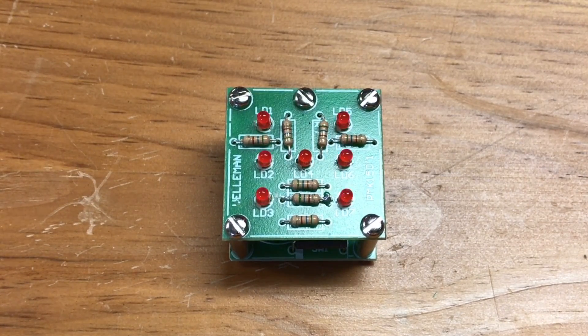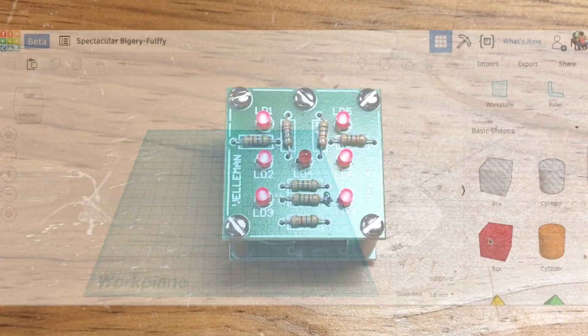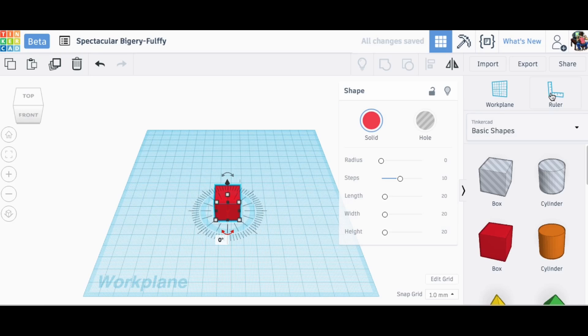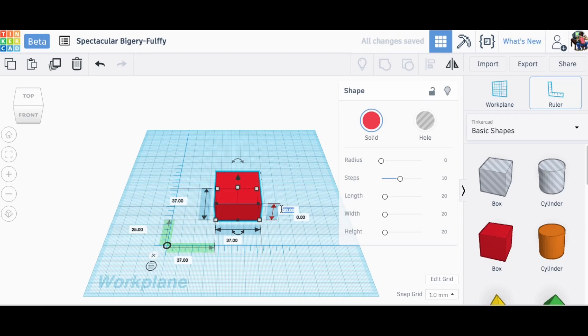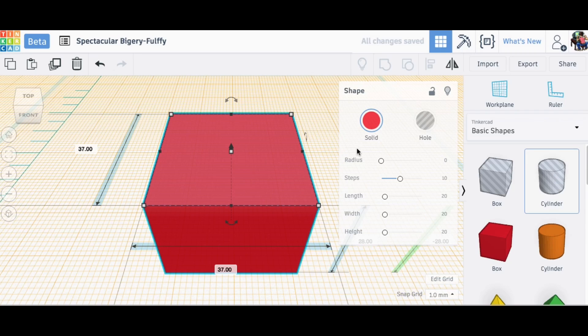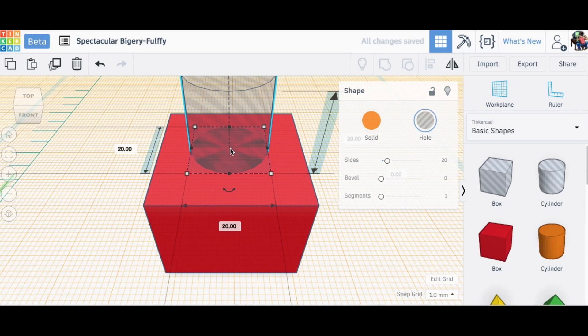So now I need to make a case for this guy. So naturally I went to Tinkercad. That's where I build most of my 3D models. What I'm actually going to do is reproduce that electronic board, the dice, as a Tinkercad model. And then I'm going to turn that into a hole and insert that into another block. That way I can take the inner guts out of it. That'll perfectly match the dice.